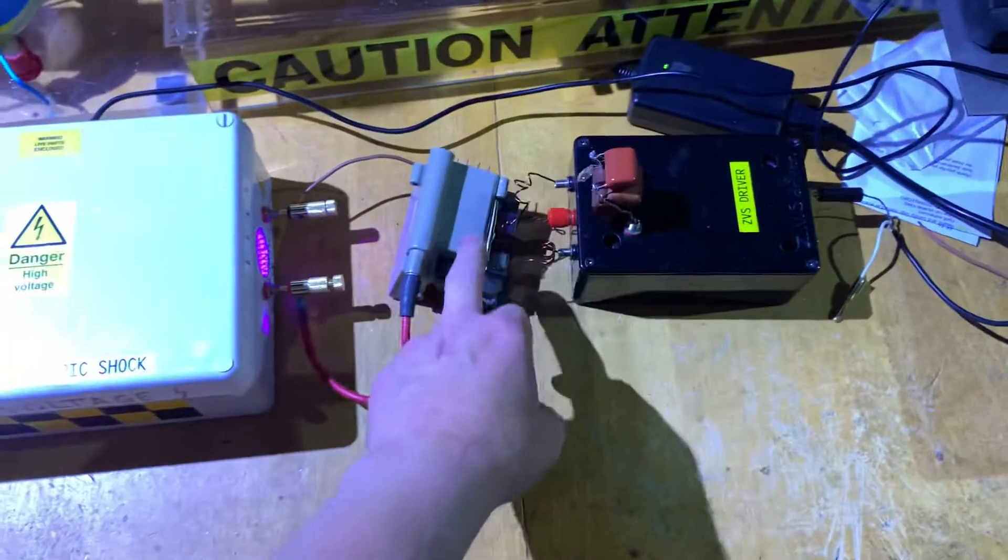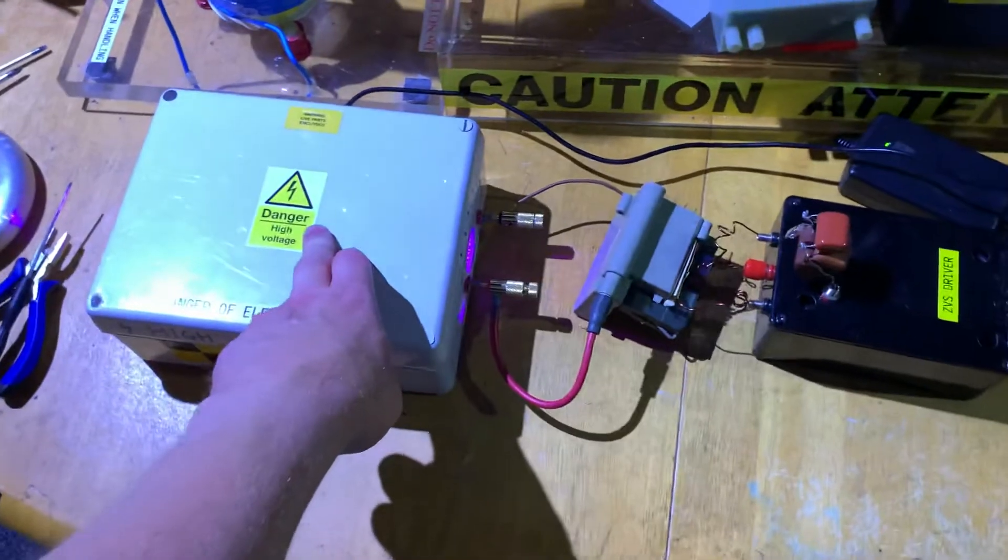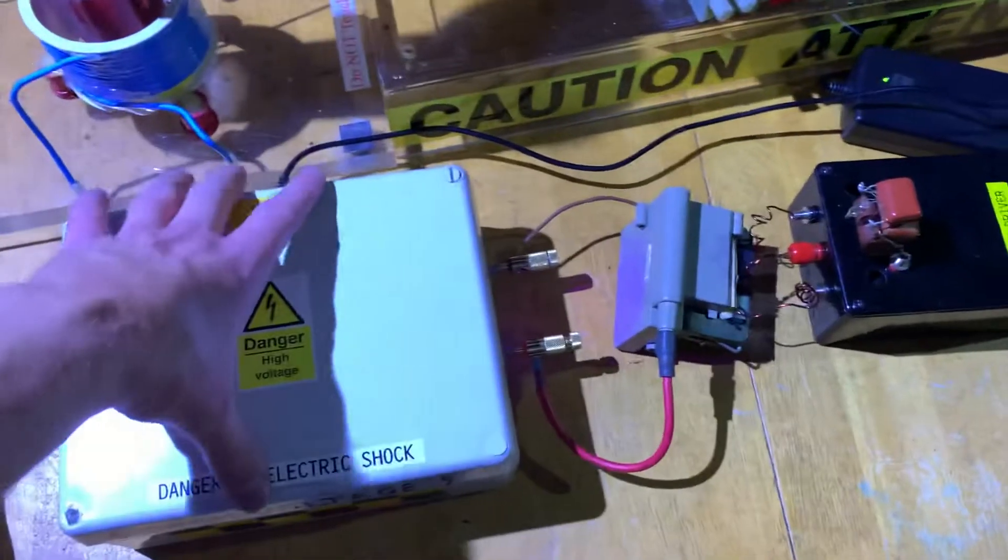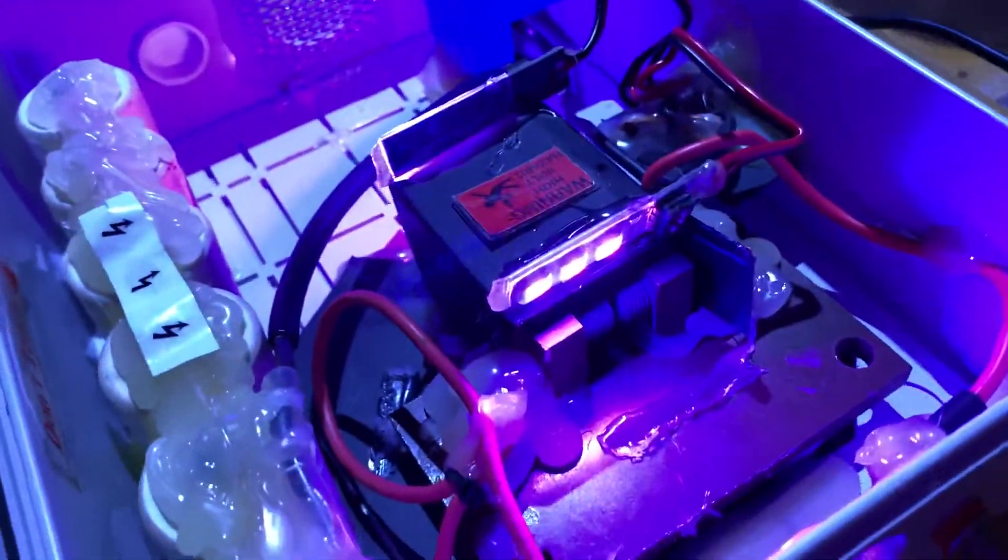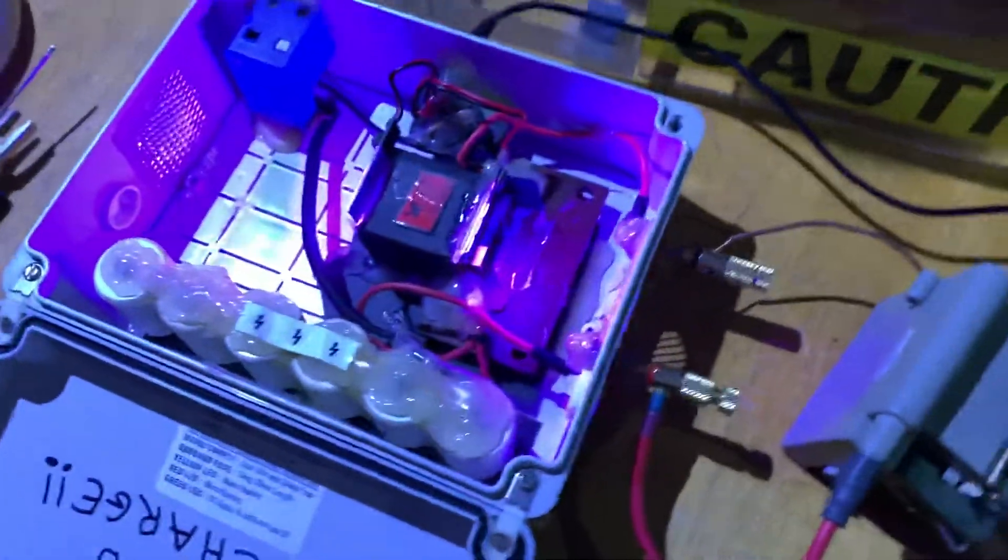I've got a tabletop Tesla coil that I've built. ZVS driver, flyback transformer, goes into a capacitor bank and spark gap with a 12 volt fan which quenches the spark on the spark gap. There's some RGB LED lights there just to give that look of high voltage arcs.